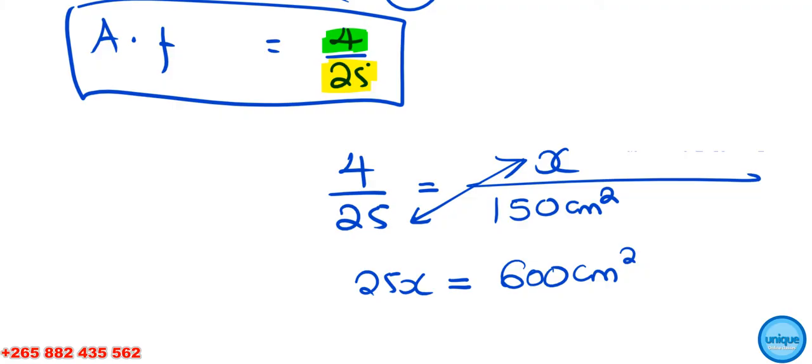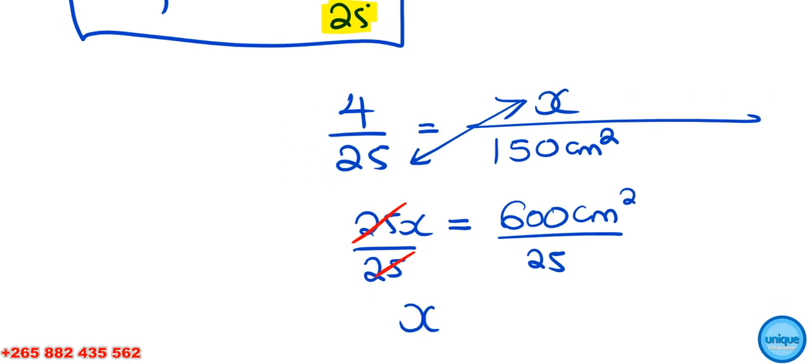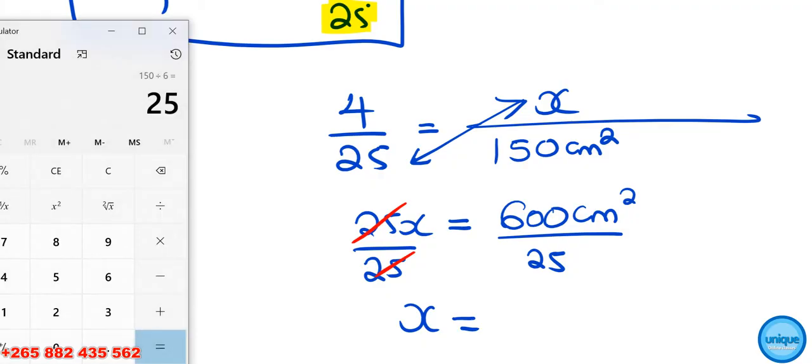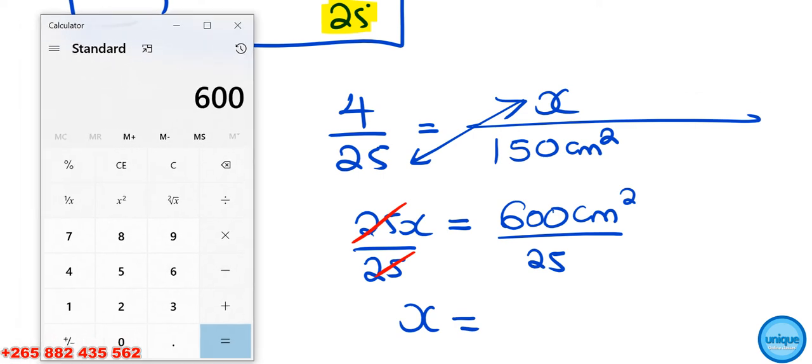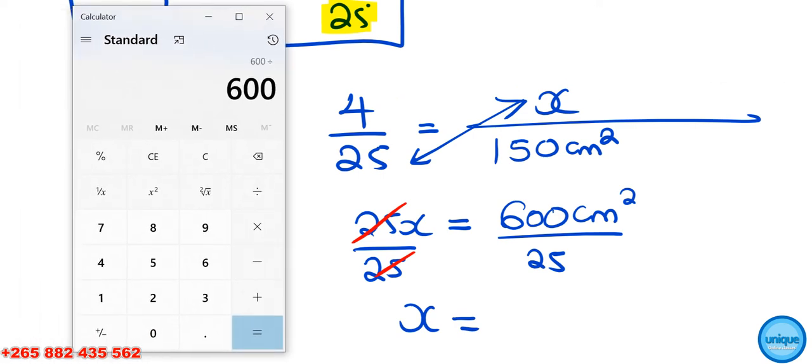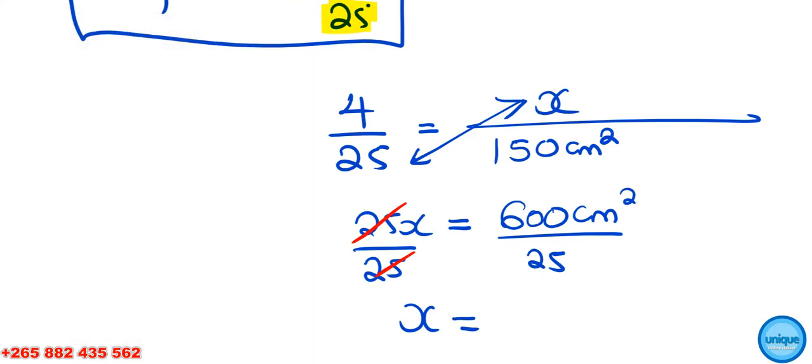To find the value of x, we're going to divide both sides by 25. The 25s cancel, so x equals 600 divided by 25, which is 24. The area of the smaller rectangle is 24 centimeter square.